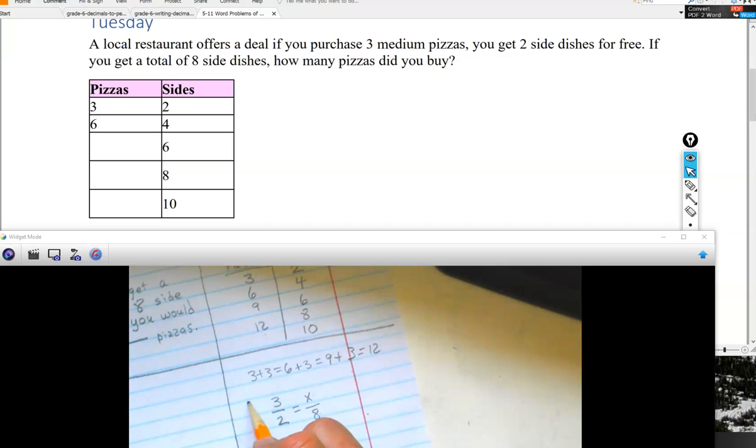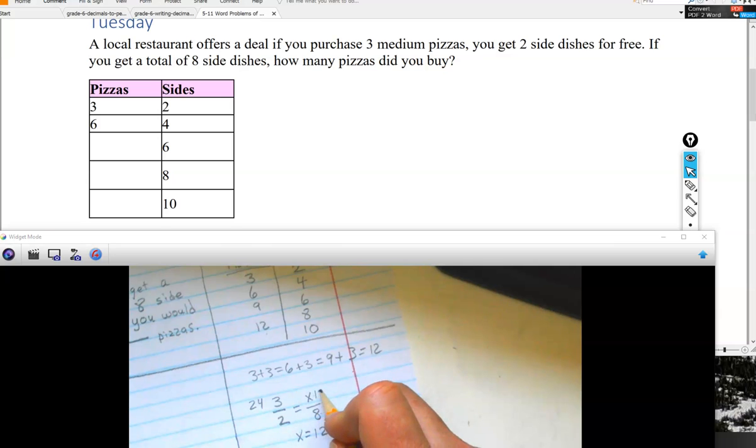Just multiply it. Three times eight is 24. Something times two over here would also want to be 24 so that we can make these equivalent fractions. Well, that would mean that two times 12. So x equals 12 here. Two times 12 is equal to 24 to make these two fractions equivalent.